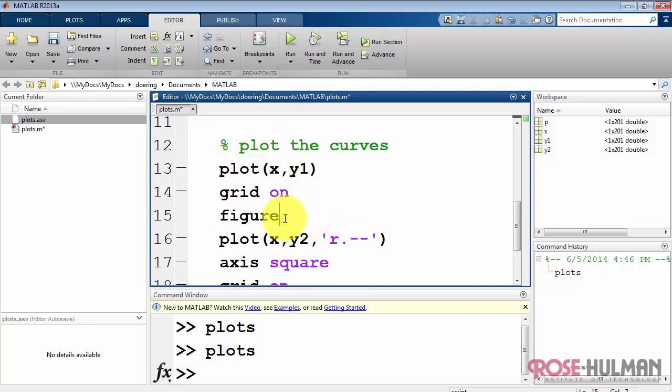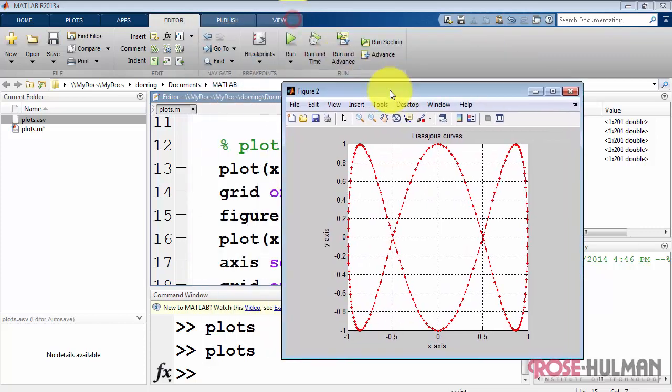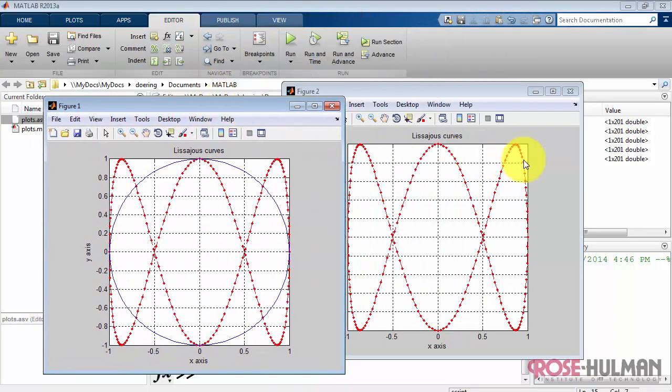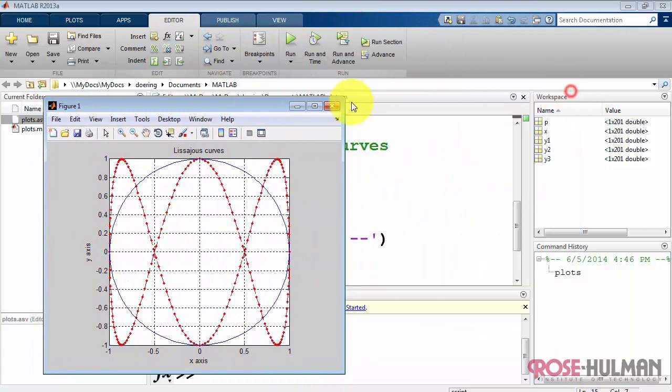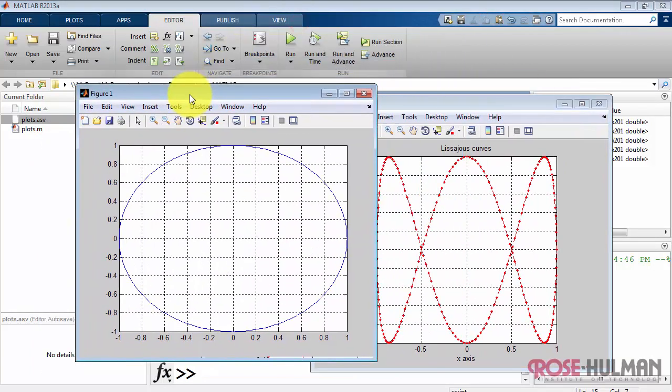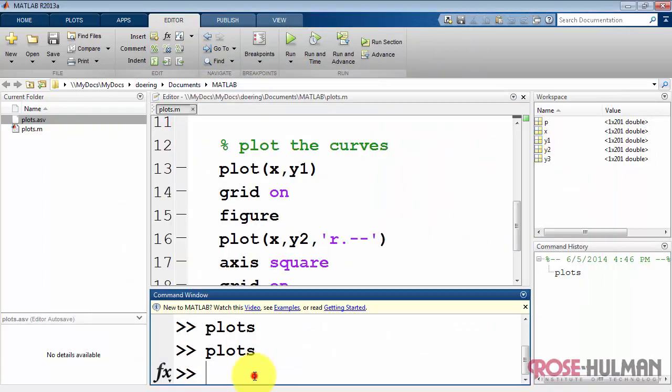Type figure to open a new figure before you issue subsequent plotting commands. You'll see running that script now has produced figure one and figure two windows. Let me run it again from scratch. There's figure one from the first plot command and then figure two from the second plot command.